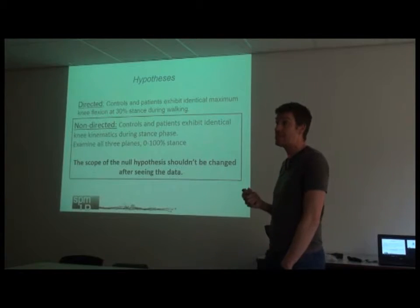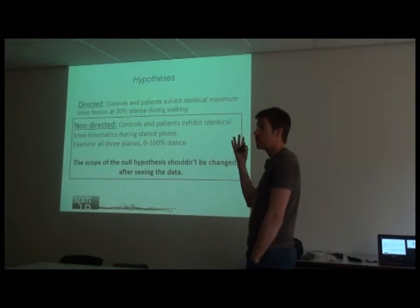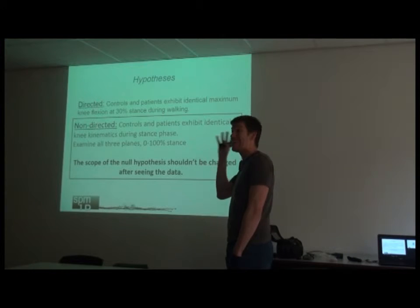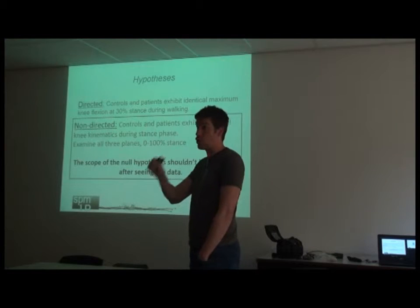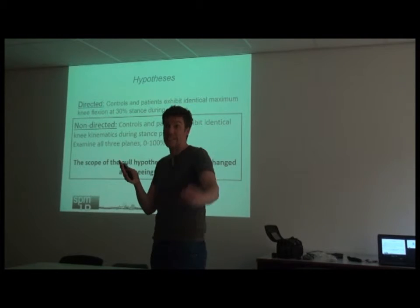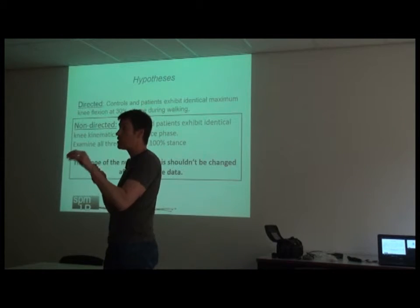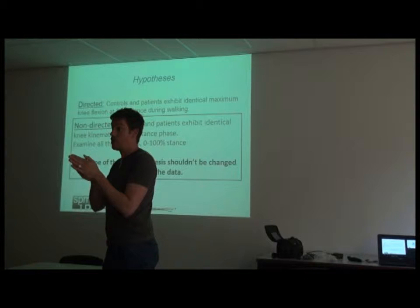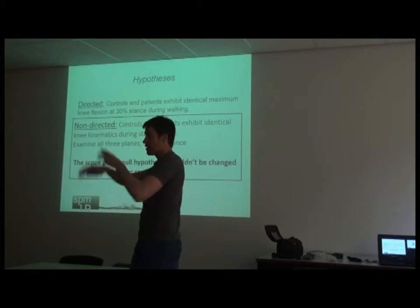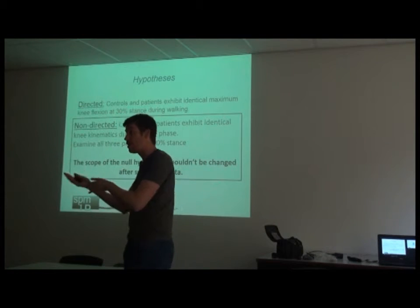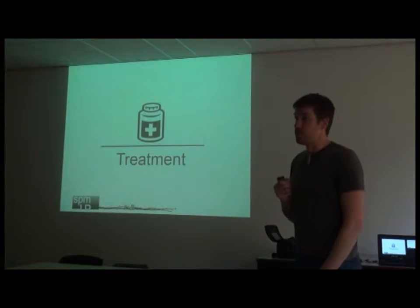The scope of the null hypothesis should not be changed after seeing the data. This is important because it justifies the use of statistical parametric mapping in many experiments. If your experiment does have a very specific focus — for example, identified through a pre-experiment — then you should only measure that and not go back to measuring 100% of your data across all three planes, refocusing and confirming whether something applies.